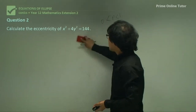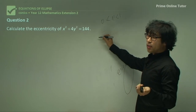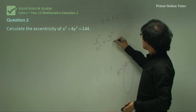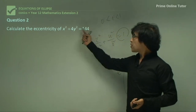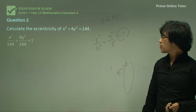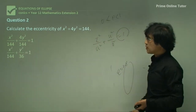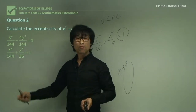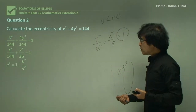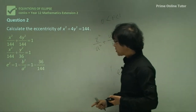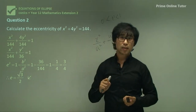Question 2: The equation doesn't immediately look like the standard form, so we divide every term by 144. After simplifying, we can see that a² = 144 and b² = 36. Now we're ready to find the eccentricity: e = √(1 − 36/144). Simplify to get the eccentricity value. That is the eccentricity value for this ellipse.